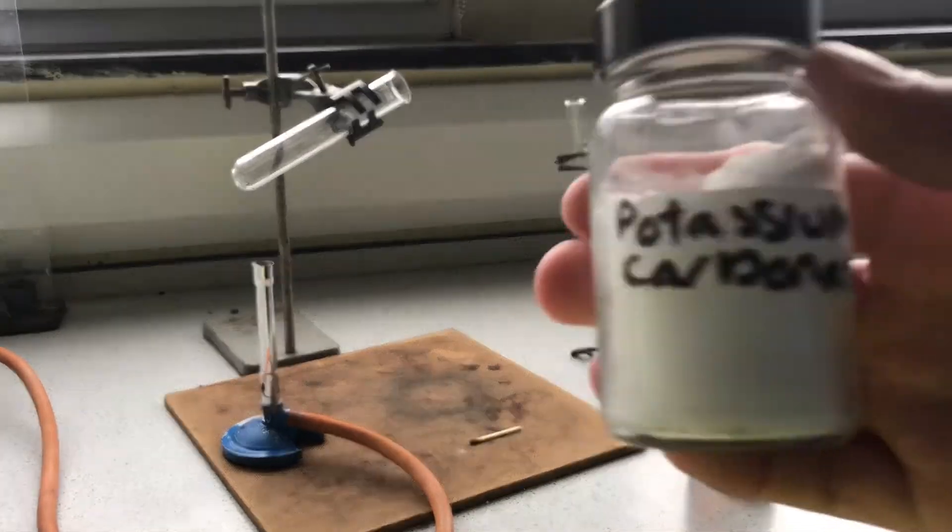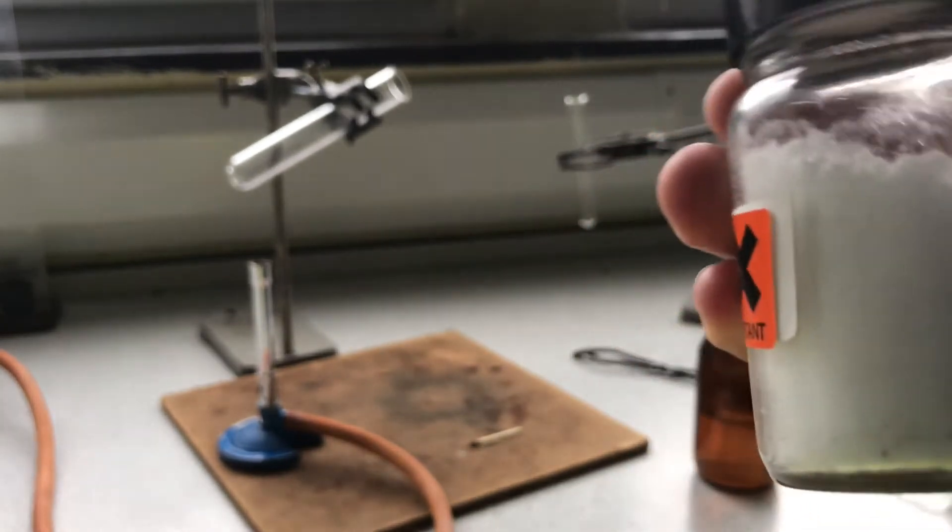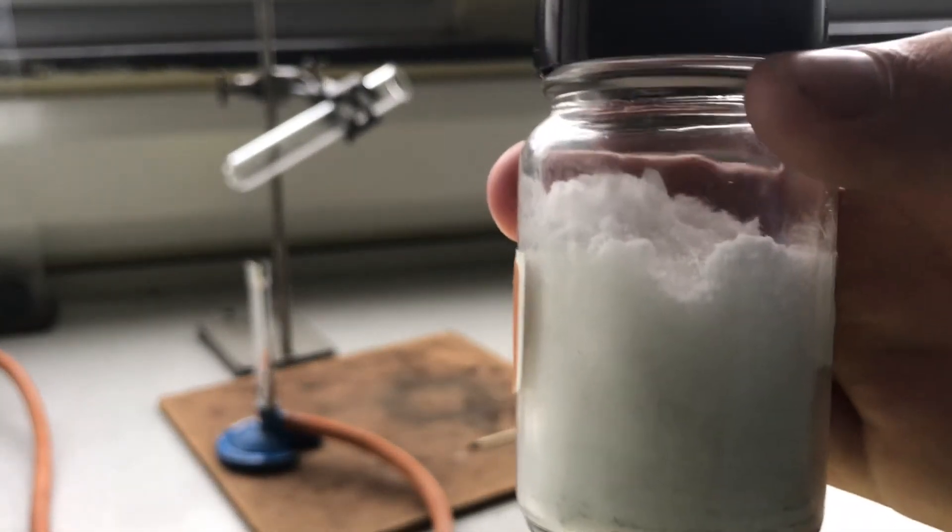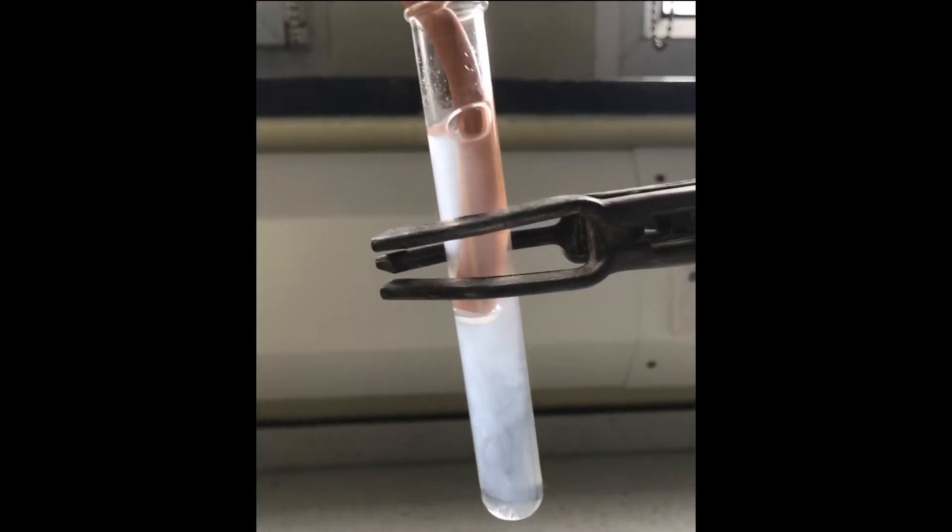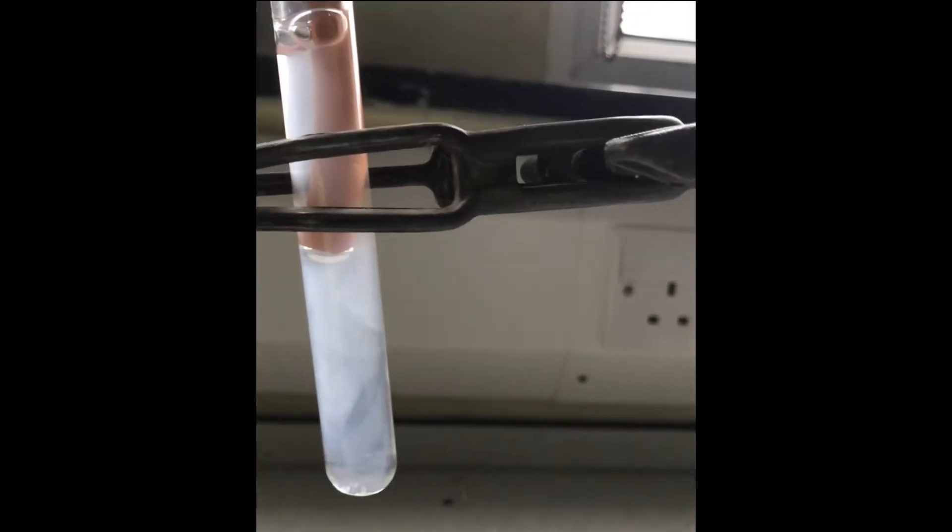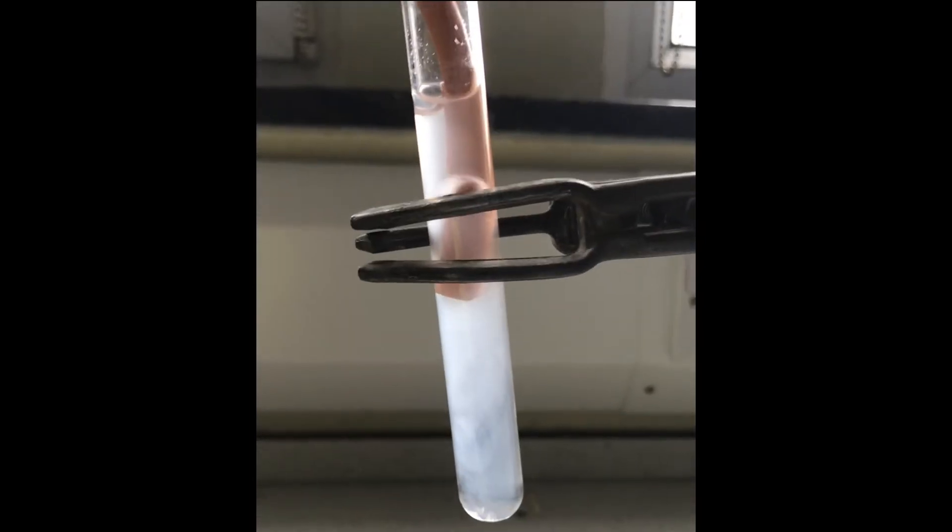The next substance we'll be using is potassium carbonate. Just like the other two metal carbonates, it's a white solid. These bubbles are carbon dioxide gas, which reacts with lime water to form a precipitate, which is a suspended solid in a solution.